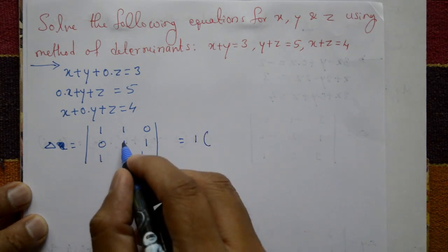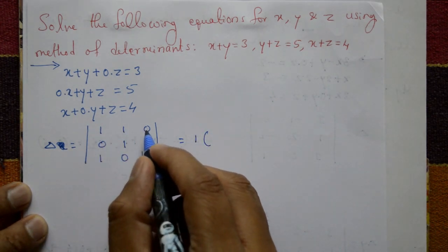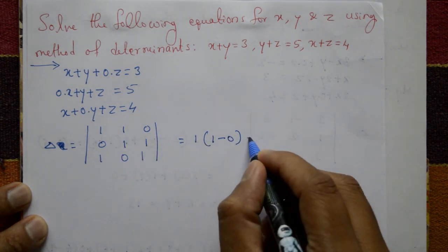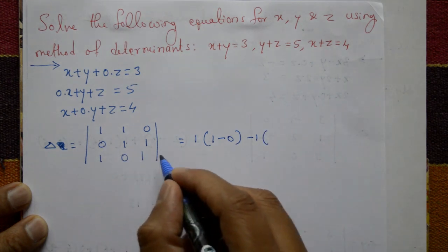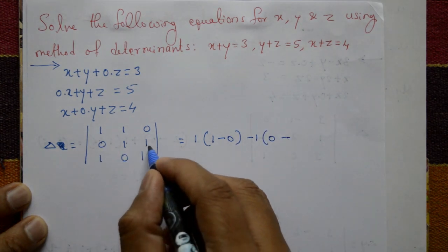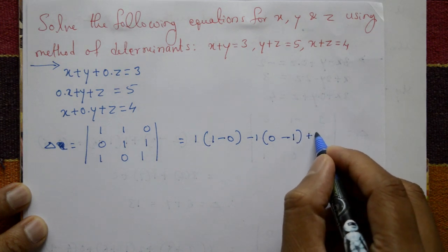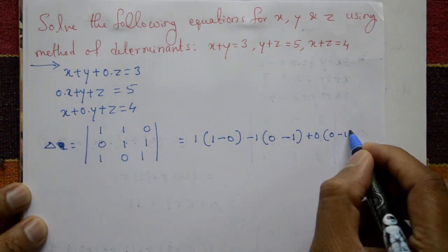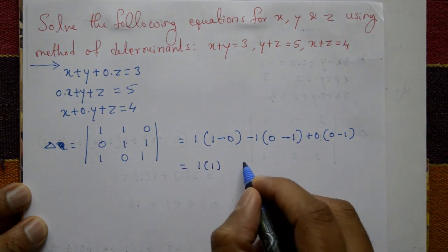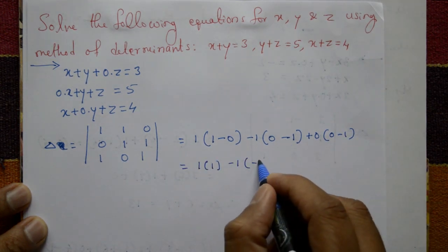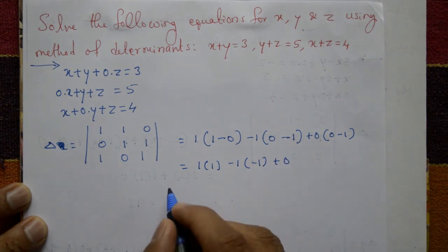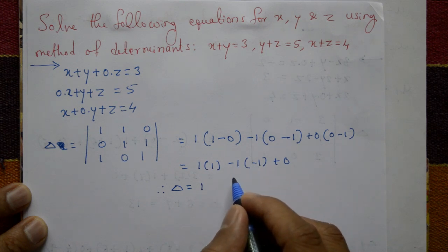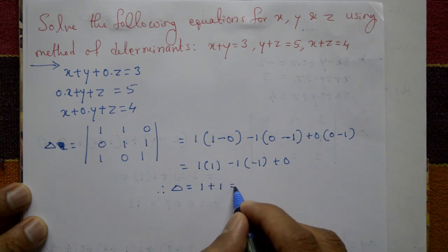Expand this determinant using plus-minus-plus pattern: 1 into (1 minus 0), minus 1 into (0 minus 1), plus 0 into (0 minus 1). This gives 1 minus (minus 1) plus 0, so delta is equal to 2.